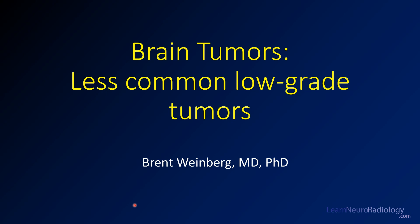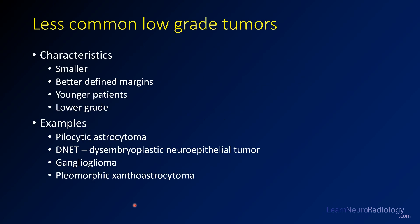Welcome back to Learn Neuroradiology. In this video, we're going to talk about some of the less common low-grade tumors that you can see within the brain. These tumors have common characteristics: they tend to be smaller, have better-defined margins, affect younger patients, and are lower grade. Some examples are pilocytic astrocytoma, DNET or disembryoplastic neuroepithelial tumor, gangliogliomas, and pleomorphic xanthroastrocytomas, or PXA.